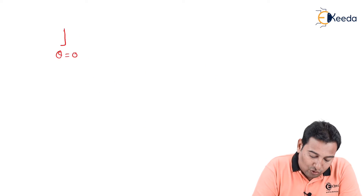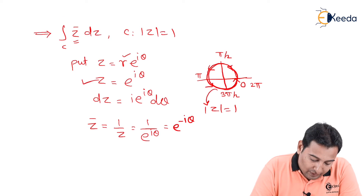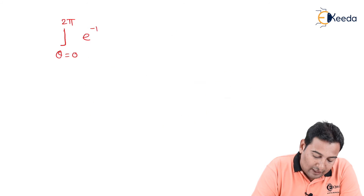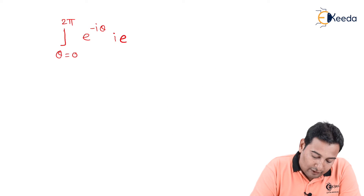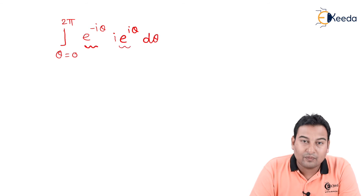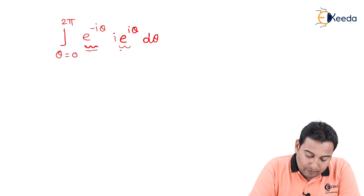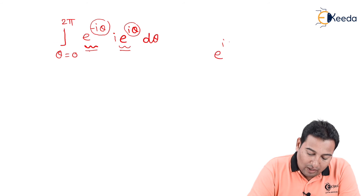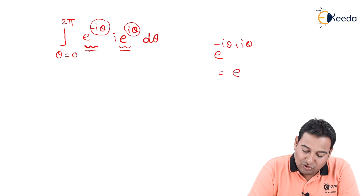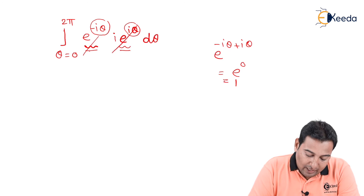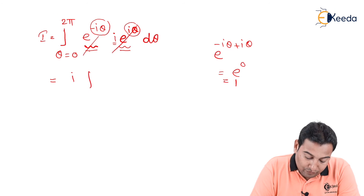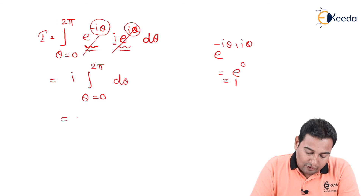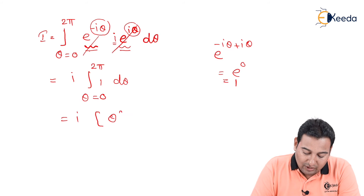Integrating from θ = 0 to 2π: z-bar is e^(−iθ) and dz is i·e^(iθ)·dθ. Multiplying these two terms, the exponents add: e^(−iθ)·e^(iθ) = e^0 = 1. So these exponential terms cancel, leaving just i. Since i is a constant, it comes out of the integral, leaving the integral of 1·dθ from 0 to 2π. The integral of 1 dθ is θ, evaluated from 0 to 2π, giving 2π. So the answer is i × 2π.